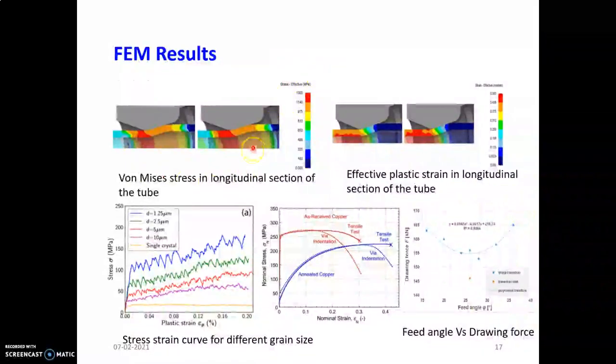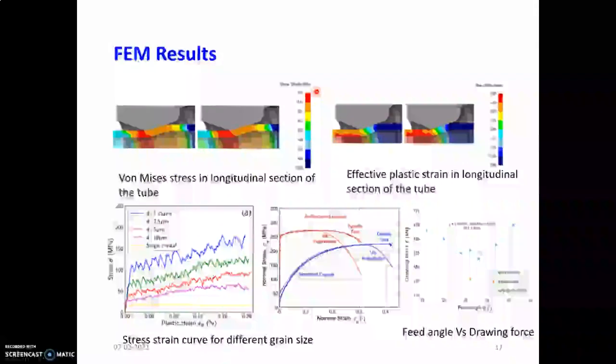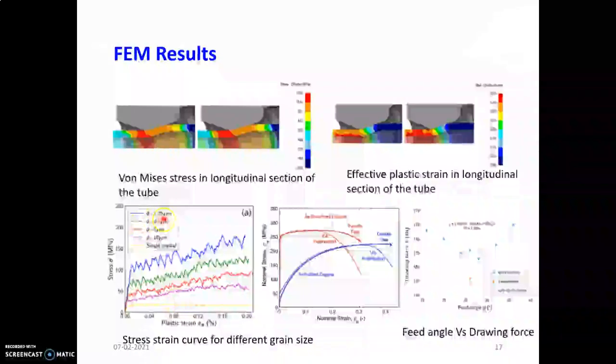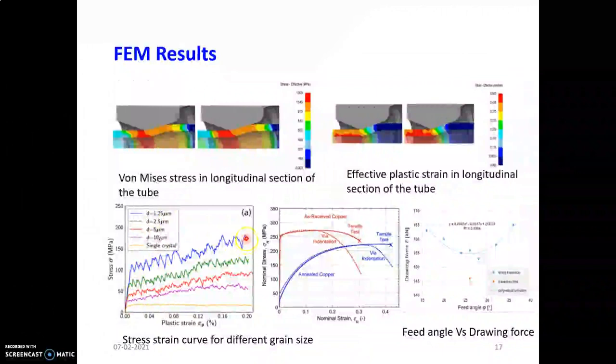As grain size decreases, the yield value increases. You can see the grain size value is 1.25 - where grain size is smaller, strength is higher.